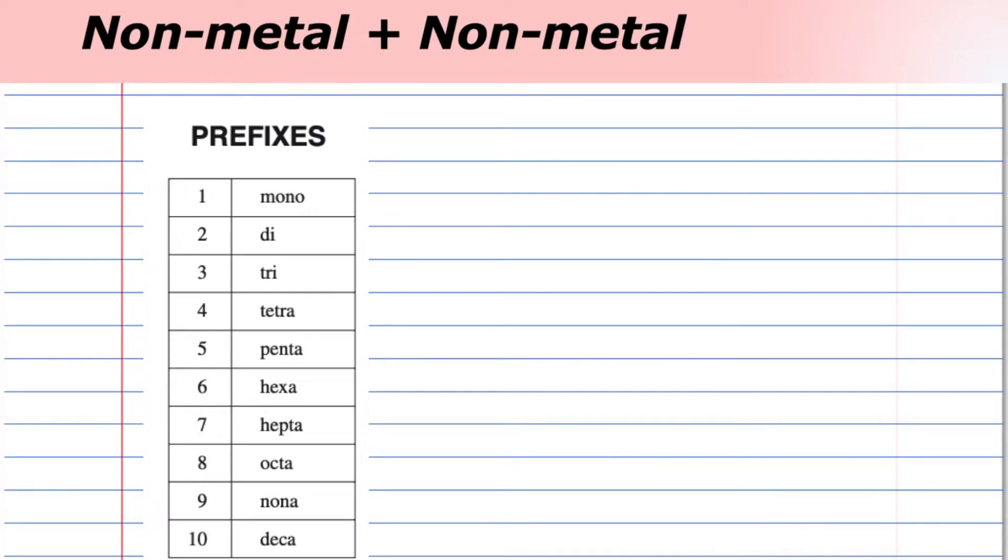Again, covalent compounds are made up of non-metals. Here are the prefixes for numbers 1 to 10. Let's look at some examples.